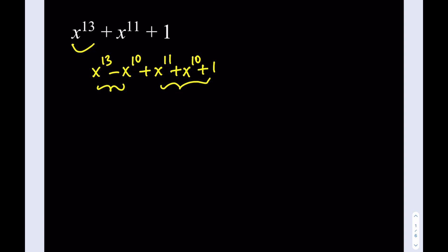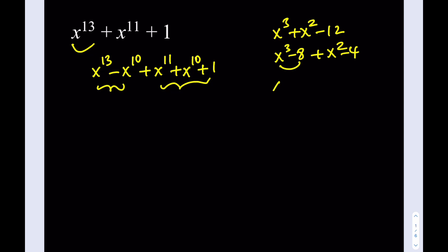Let me give you a good example. Suppose you had the following problem: x cubed plus x squared minus 12. This might look like an unusual polynomial, but it's easy to factor. I can write this as x cubed minus 8, plus x squared minus 4. Obviously this is factorable and contains x minus 2, and this is factorable and contains x minus 2. So they have a common factor. But this one is still big, so I'm going to keep breaking it down until I get something nicer.